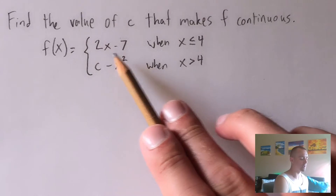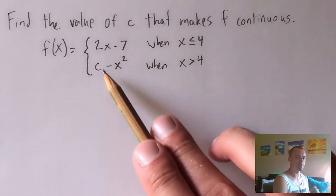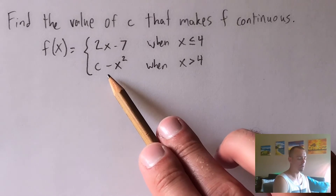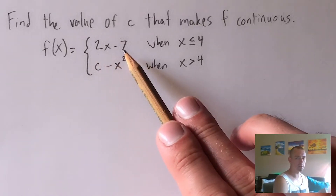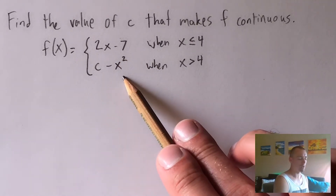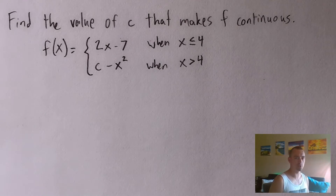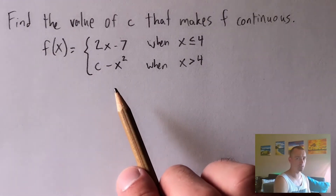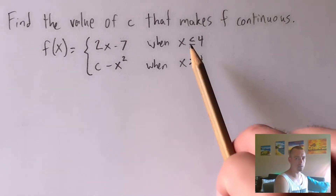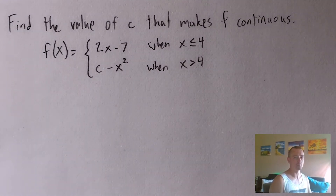Looking at each piece: 2x minus 7 and c minus x squared — where c is some unknown constant — each of these functions is continuous everywhere. 2x minus 7 is a linear function, and c minus x squared is a quadratic. Both are polynomials, and all polynomials are continuous for all x values. So no matter what c is, both pieces are continuous within their restricted domains.